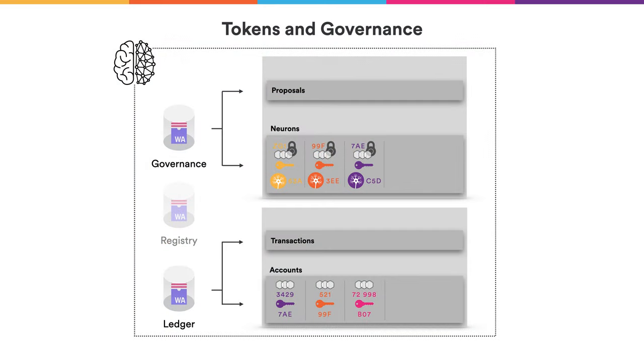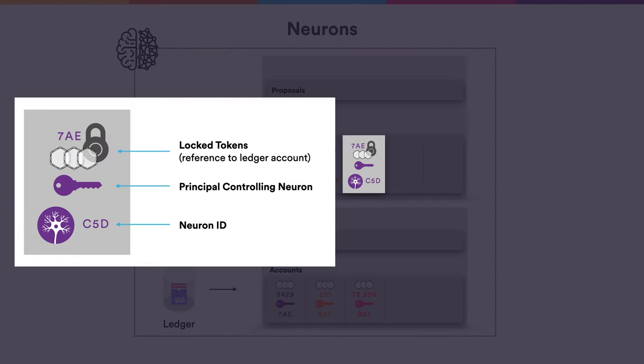First we look at how tokens can be used for governance — how they can be used to add proposals and to vote on them. Voting is done based on neurons and the high level idea is that those who have more tokens have more voting power. Decisions in the internet computer are made based on a stake-based model. However, neurons do not correspond to tokens; neurons actually contain locked tokens, meaning these tokens are not liquid and cannot be transferred freely to others. In more detail, a neuron stores how many tokens are associated with it, by referencing an account on the ledger.